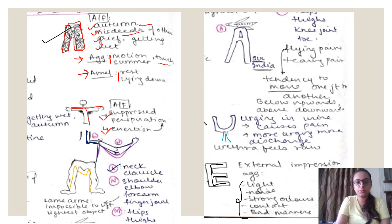So we have A, U, T, A, M, N, A here for aggravation and amelioration. L and an E. So this is Autumnale.